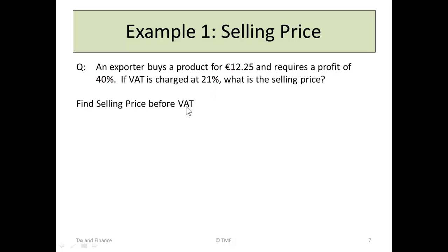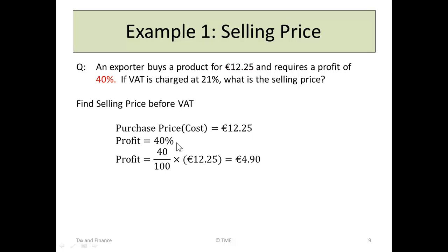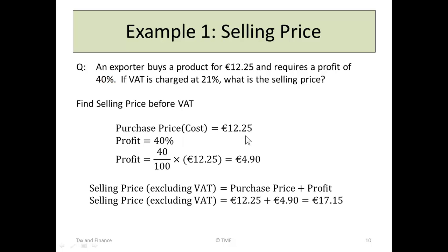We start by finding the selling price before VAT. The purchase price is $12.25. We want a profit of 40%, which is 40 over 100 of the purchase price, giving us $4.90. So the selling price before VAT must be the purchase price plus the profit: $12.25 plus $4.90, which is $17.15. That is the price we would have to charge to achieve 40% profit, but that is before we include VAT.